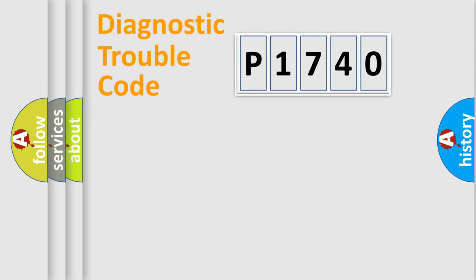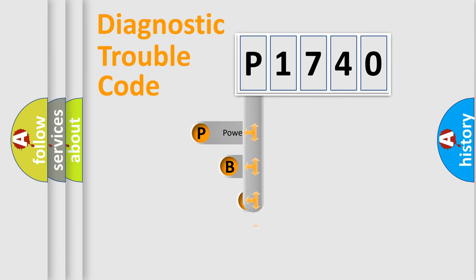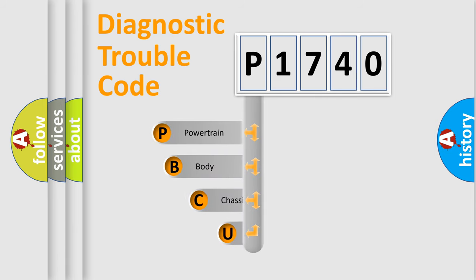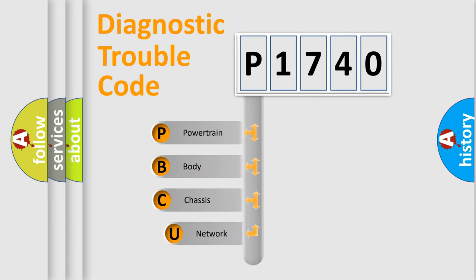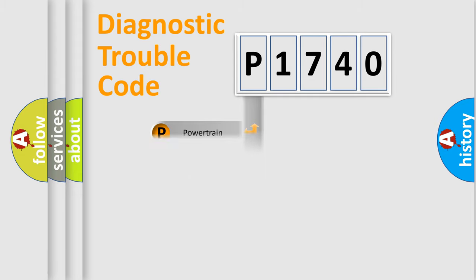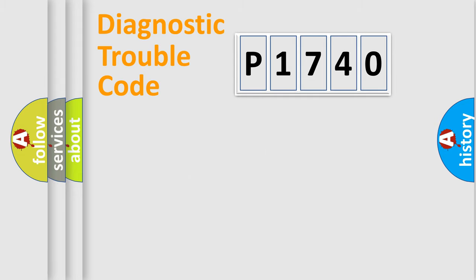First, let's look at the history of diagnostic fault code composition according to the OBD2 protocol, which is unified for all automakers since 2000. We divide the electric system of an automobile into four basic units: Powertrain, body, chassis, and network.